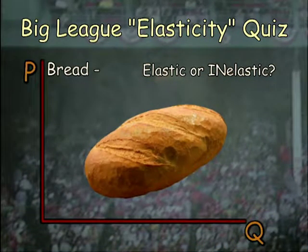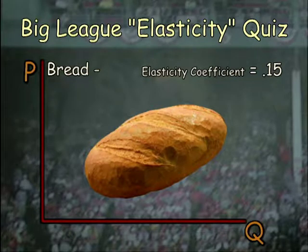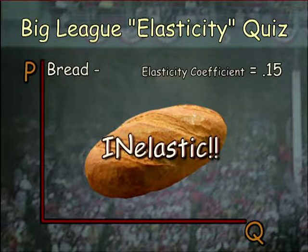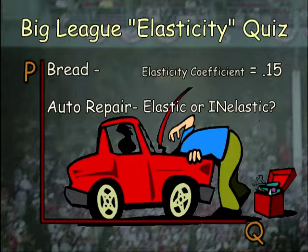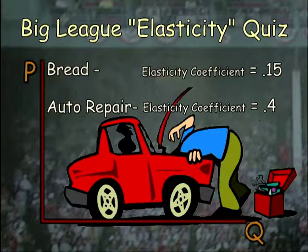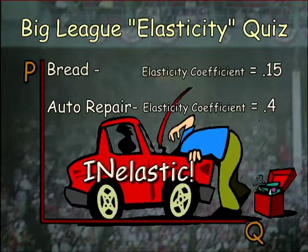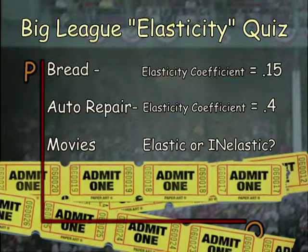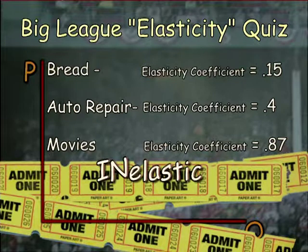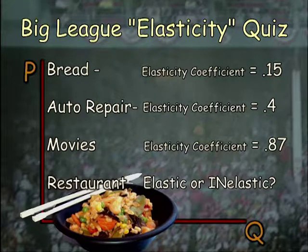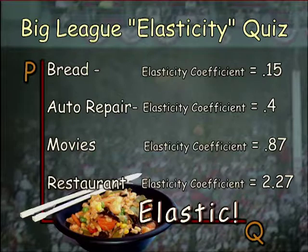Now, let's test this with a big-league elasticity quiz. Take a guess at elasticity coefficients for the following items at current prices. Bread — elastic or inelastic? Actually, 0.15: way less than one, and thus inelastic. The demand for bread is not very responsive to price. Auto repair — 0.4, still relatively inelastic. Movie tickets — 0.87, almost unit elastic but not quite. Finally, a restaurant meal — 2.27, quite elastic. Americans would cut back a lot on eating out if current prices rose.